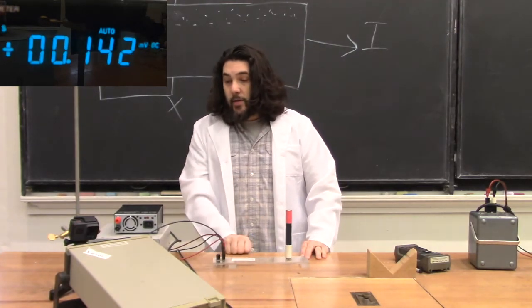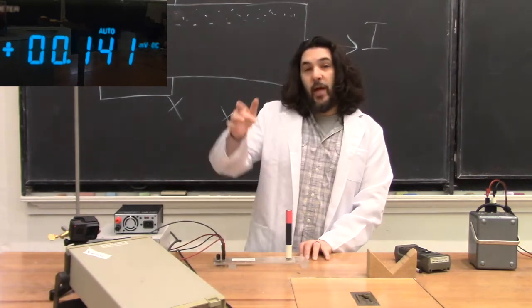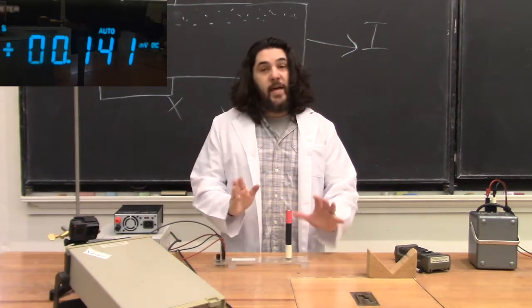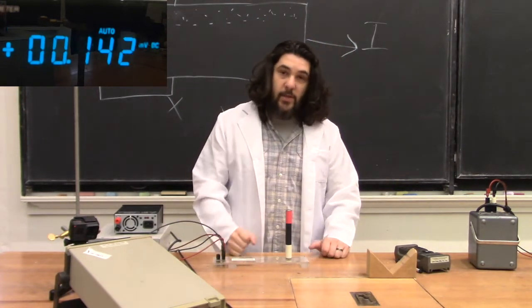And here we see an increase of 0.5 millivolts whenever we have a magnetic field pointed down. That indicates that the charge carriers in bismuth are positive.